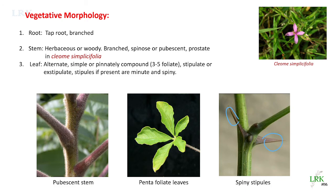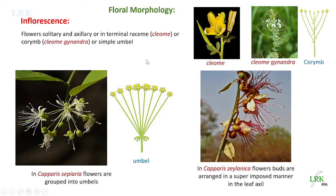Coming to floral morphology, the inflorescence is commonly apical or rarely axillary. Apical means the apical bud develops into an inflorescence; axillary means the inflorescence develops in the leaf axil. The inflorescence is a raceme type in Cleome, or a corymb in Cleome gynandra.